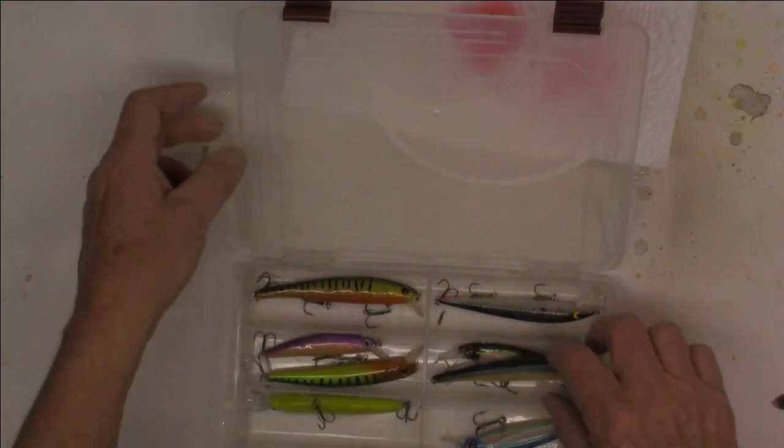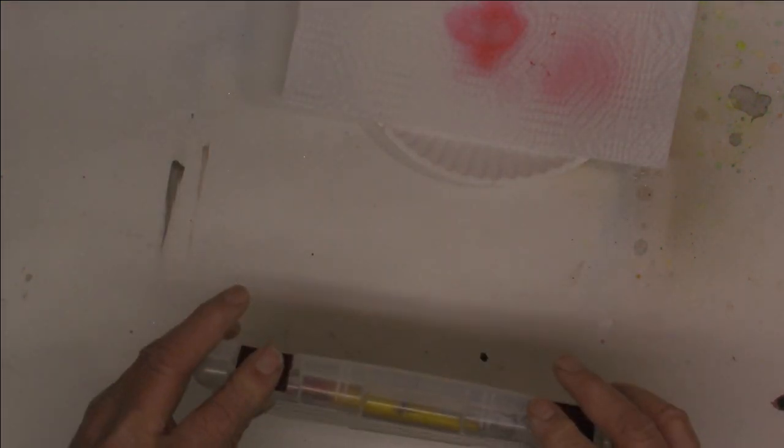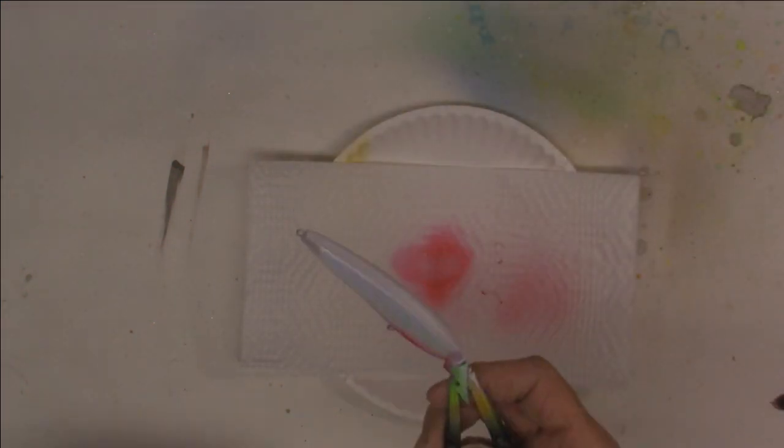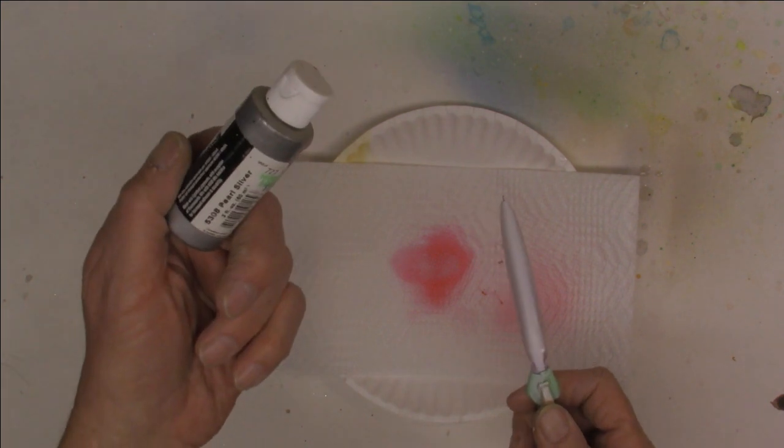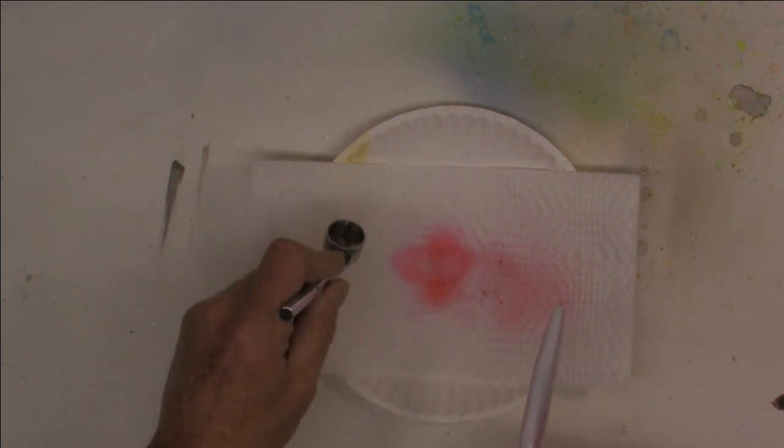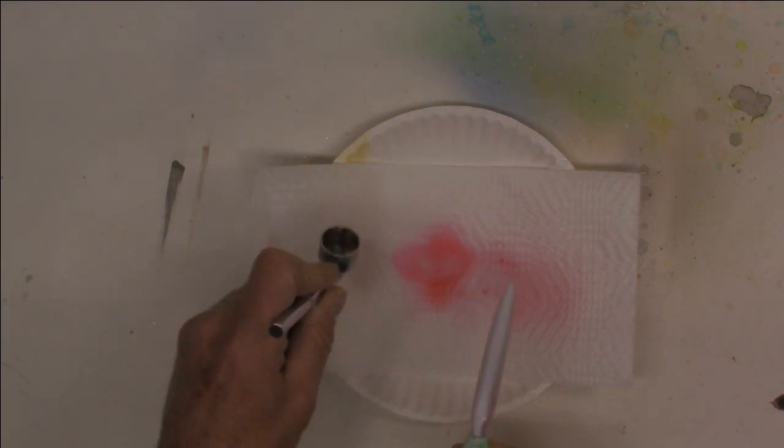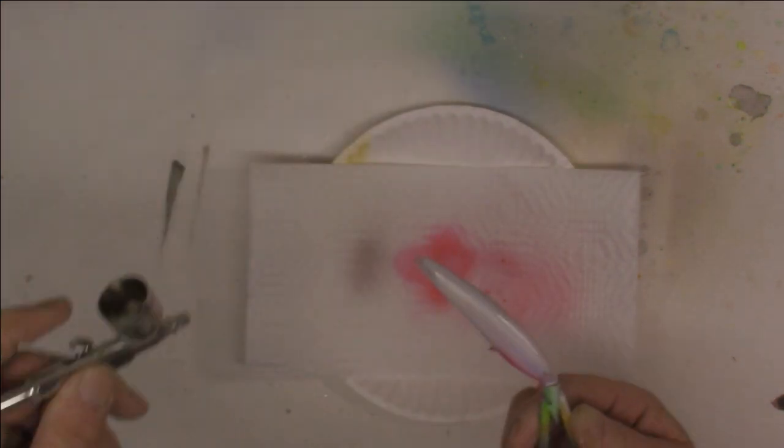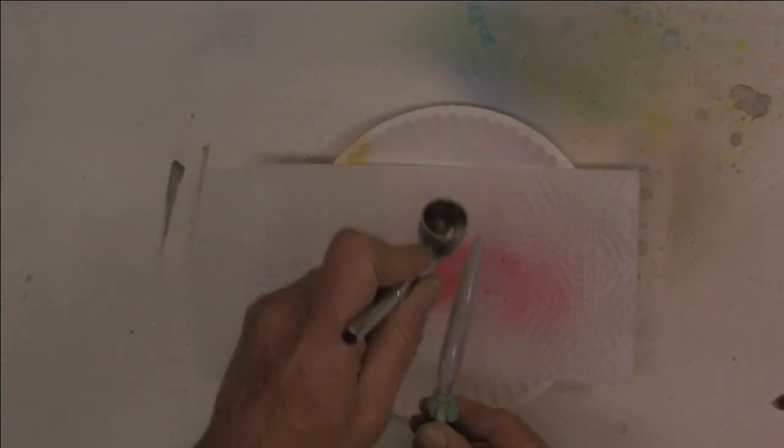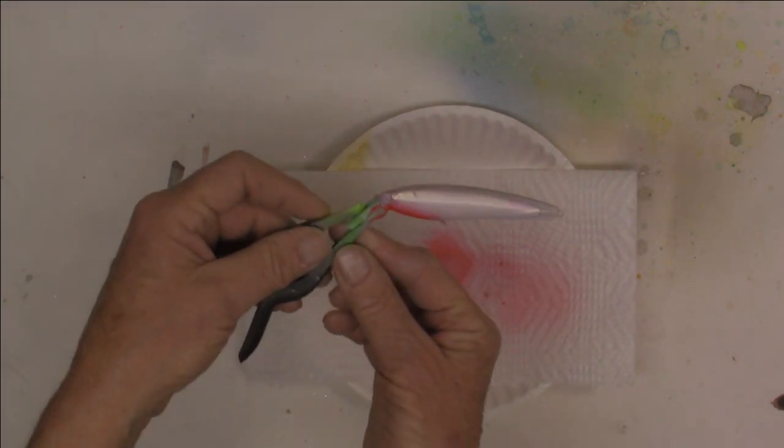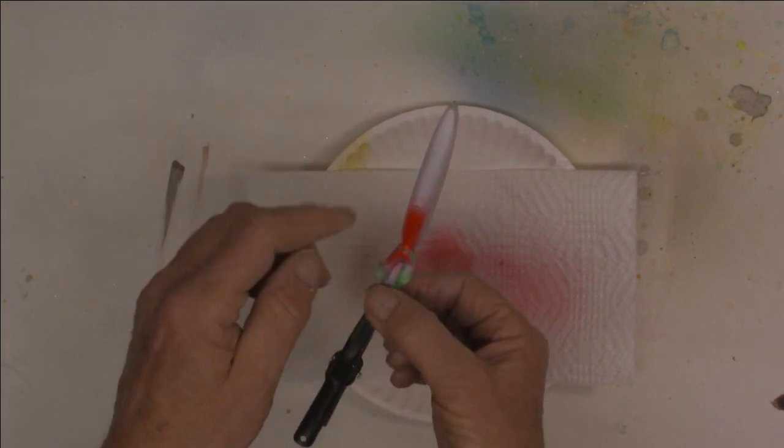We've got one lake I go to that has a lot of shad. So with that in mind, what we're going to do is Createx Pearlized Silver. We're just going to go silver. Just enough to cover that white. It doesn't give you much, I understand that. But there we go. Pearlized silver on top with my pearlized white and a little red.